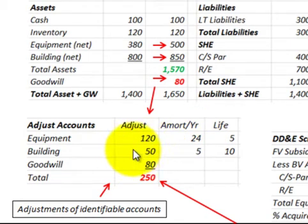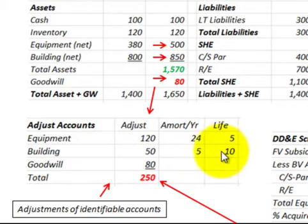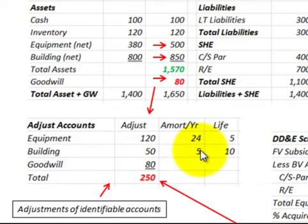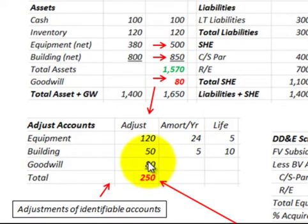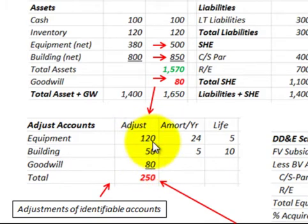We also have the building appraised up by $50,000, with a remaining useful life of ten years, so we'd have depreciation at $5,000 per year. We also have goodwill in this acquisition of $80,000. Summing those adjusted accounts gives a total amount of adjustments of $250,000.